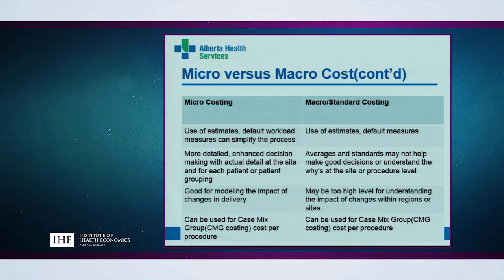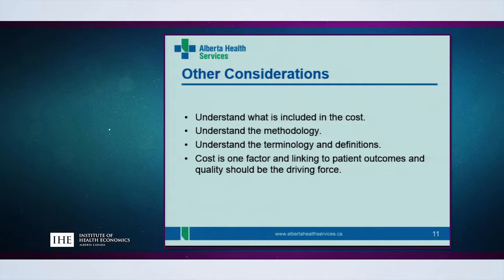You can get around some of the missing activities in micro costing by using estimates for workloads and simplifying processes. Both micro costing and macro costing can be used for CMG or case-mix group costing for procedures. Micro costing supports more detailed, enhanced decisions, while average or standard costing may not support decisions requiring that level of detail.